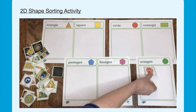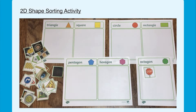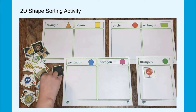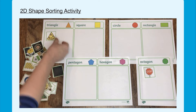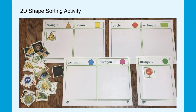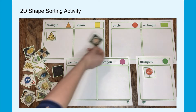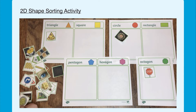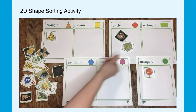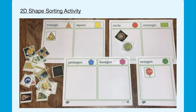In the first lesson we will learn to name and sort 2D shapes. To do this activity you simply need to take the picture and place it into the correct category. Remember to look at the properties of the shapes — how many sides and how many vertices does it have?